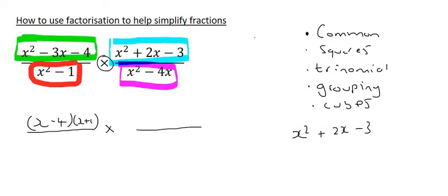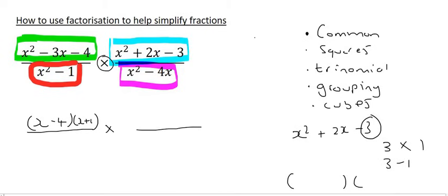Moving on to the x squared plus 2x minus 3. Well, that is also a trinomial. And so what we do is we take the number 3 and we find its factors, which is 3 times 1. Can 3 and 1 ever give you a 2? Well, yes. 3 minus 1 is 2. And so we open up our two brackets, and we say 3 minus 1, and then we just say x and x. The 3 has a plus because we know that this 3 over here is positive. So it's plus 3 minus 1 gives us 2.